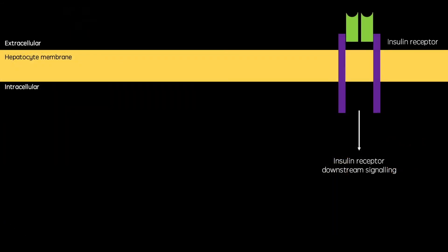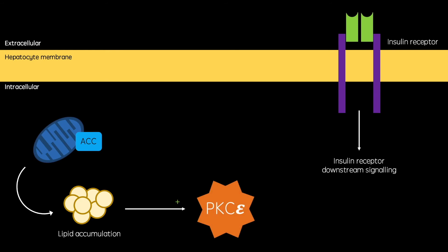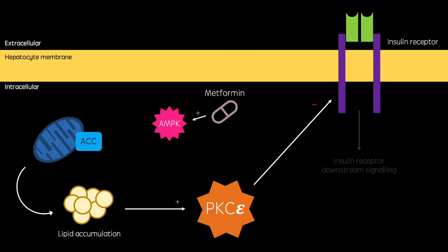Additionally, in obesity — and let's remember that the majority of type 2 diabetics develop the condition as a direct result of obesity — an accumulation of fat in the liver results in the activation of protein kinase C epsilon, which inhibits the downstream signaling cascades of the insulin receptor. However, metformin again activates AMPK, which inhibits the acetyl-CoA carboxylase molecules on mitochondria, reducing their ability to synthesize fatty acids, thus alleviating the suppression of insulin receptor signaling.